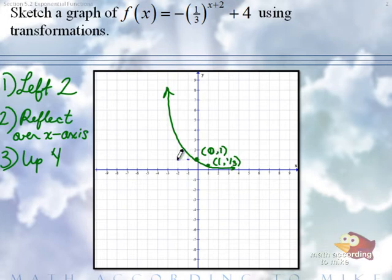If you reflect it over the x-axis, you'd be down there. And now, if you took that and moved up 4, 1, 2, 3, 4, 0, 1 moves right there.